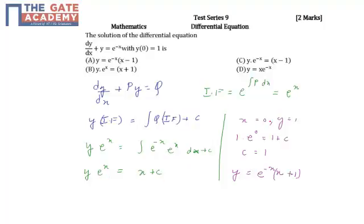So now if x is equal to 0 and y is equal to 1, what we will get is 1 into e raised to 0 is equal to 0 plus c, hence we will get c is equal to 1.